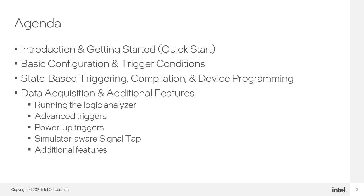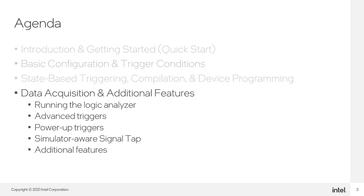Here is the agenda for this four-part training. In Part 1, you got an introduction to the SignalTap Embedded Logic Analyzer, including a quick-start guide for implementing and using the Logic Analyzer. In Part 2, you learned how to set up basic trigger conditions and choose options for the operation of the Logic Analyzer. In Part 3, we looked at the flexible state-based triggering flow, learned about compiling and recompiling a design that includes the Logic Analyzer, and about programming a device with that design. In this final part, we'll cover options for running the Logic Analyzer and examine some more advanced features available in the tool to help simplify the debugging process.